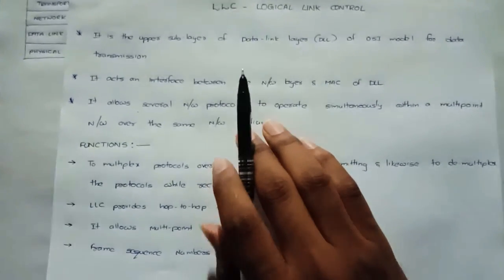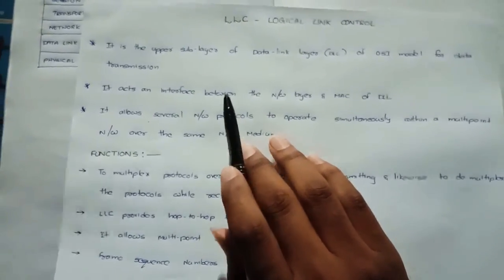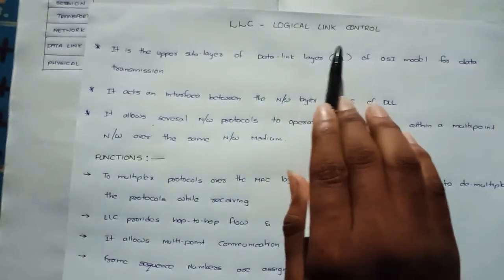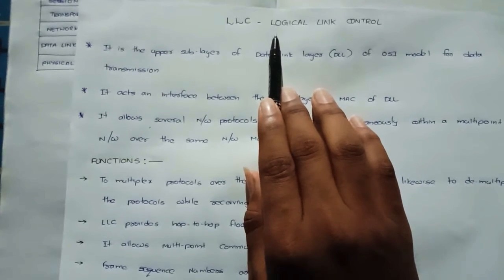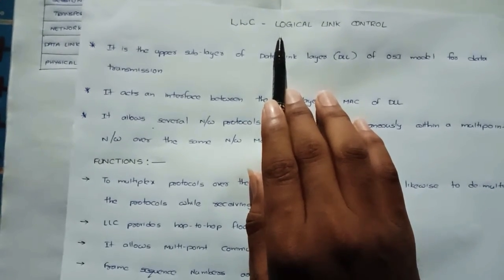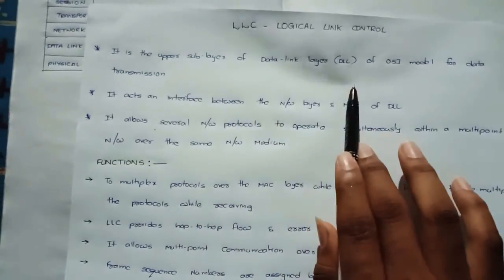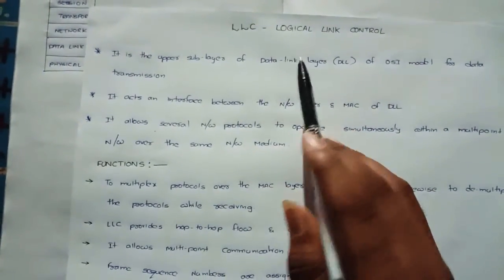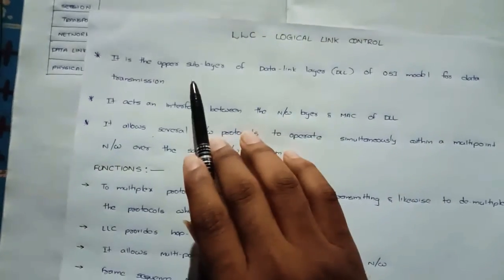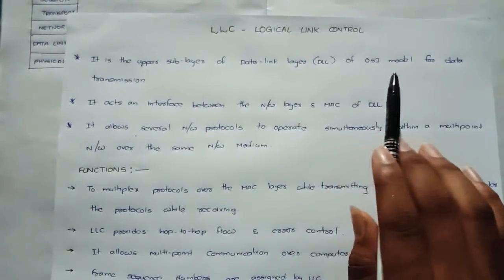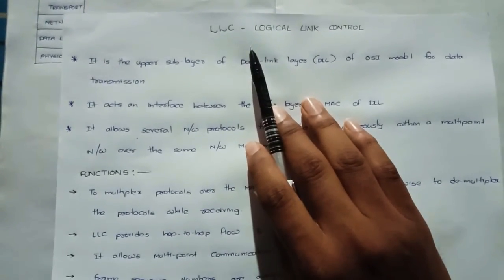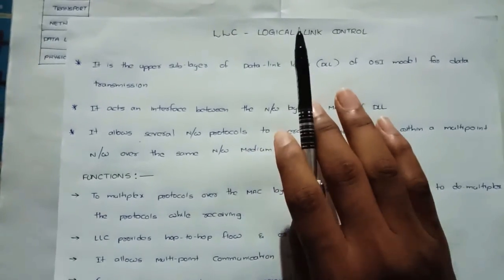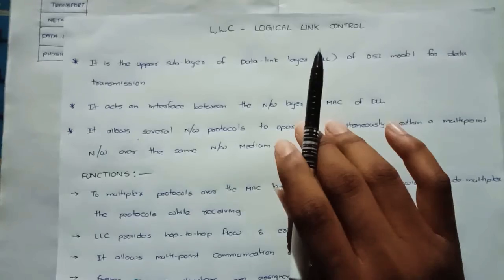Hello everyone. Today our topic is about LLC, which means Logical Link Control. We have already discussed the other sub-layer of the Data Link Layer, which is MAC (Medium Access Control). LLC is the upper sub-layer of the Data Link Layer in the OSI model, while MAC is the lower sub-layer. Both sub-layers are used for data transmission.